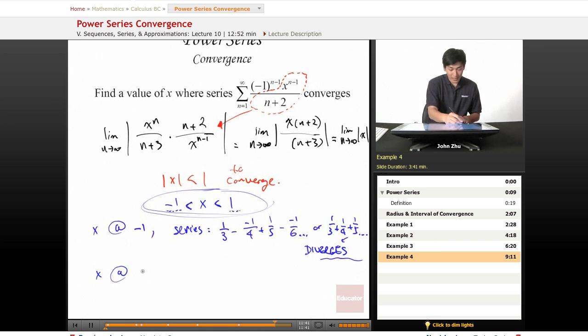And let's look at x = 1. This series becomes 1/3 - 1/4 + 1/5 - 1/6. So this is actually an alternating convergent series, so this part converges.